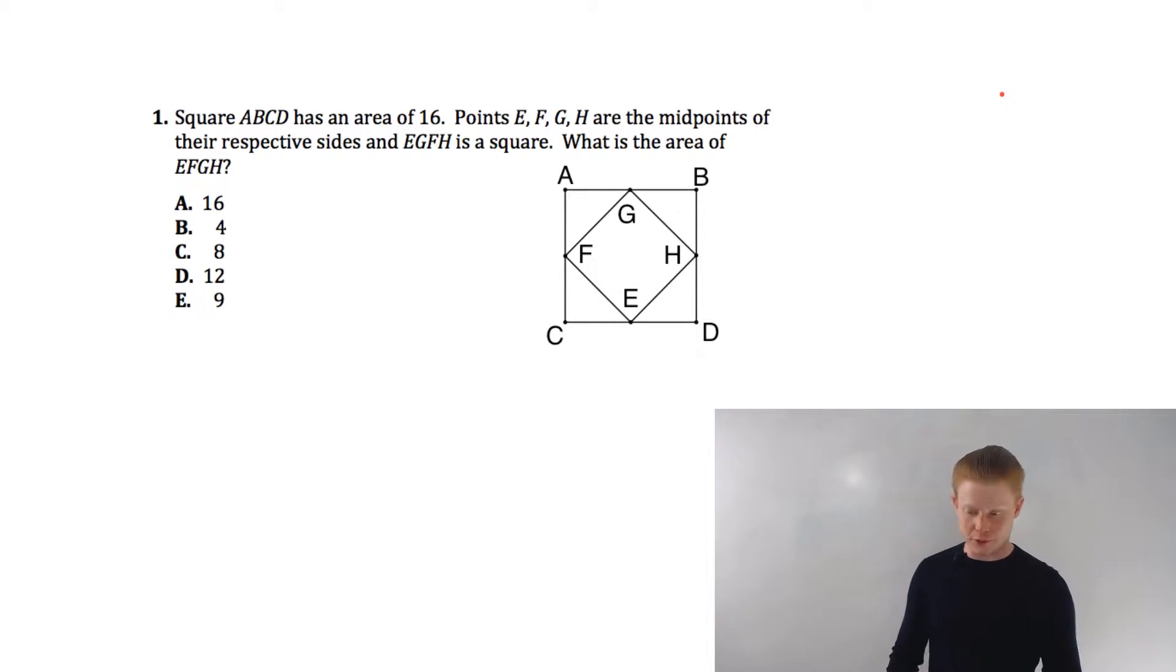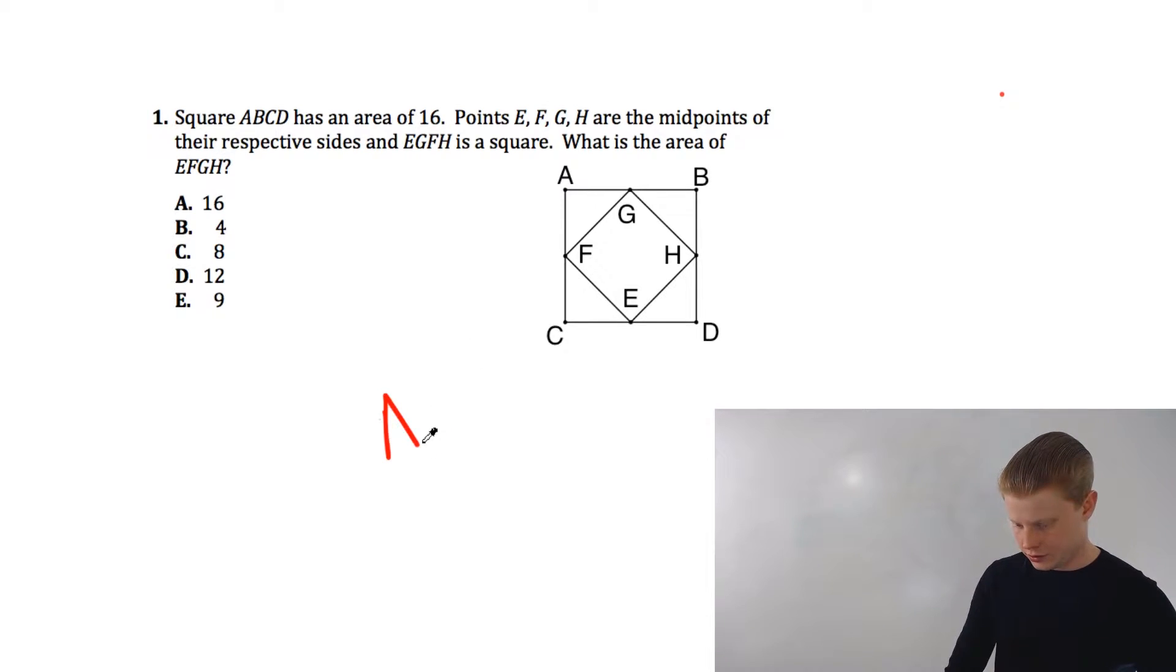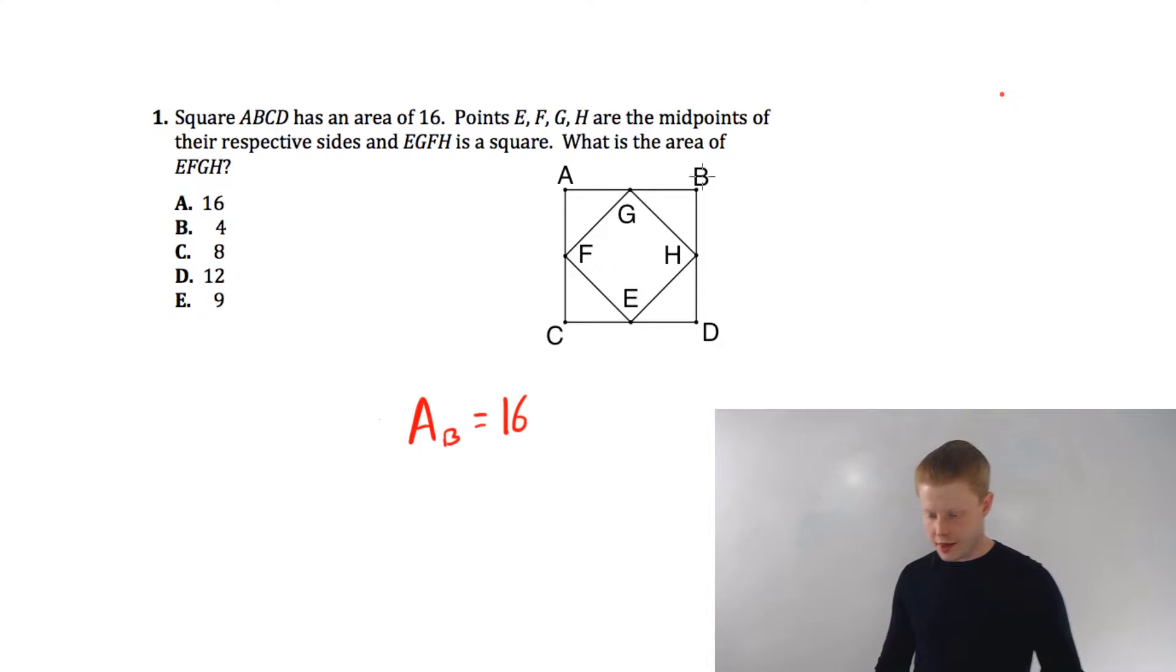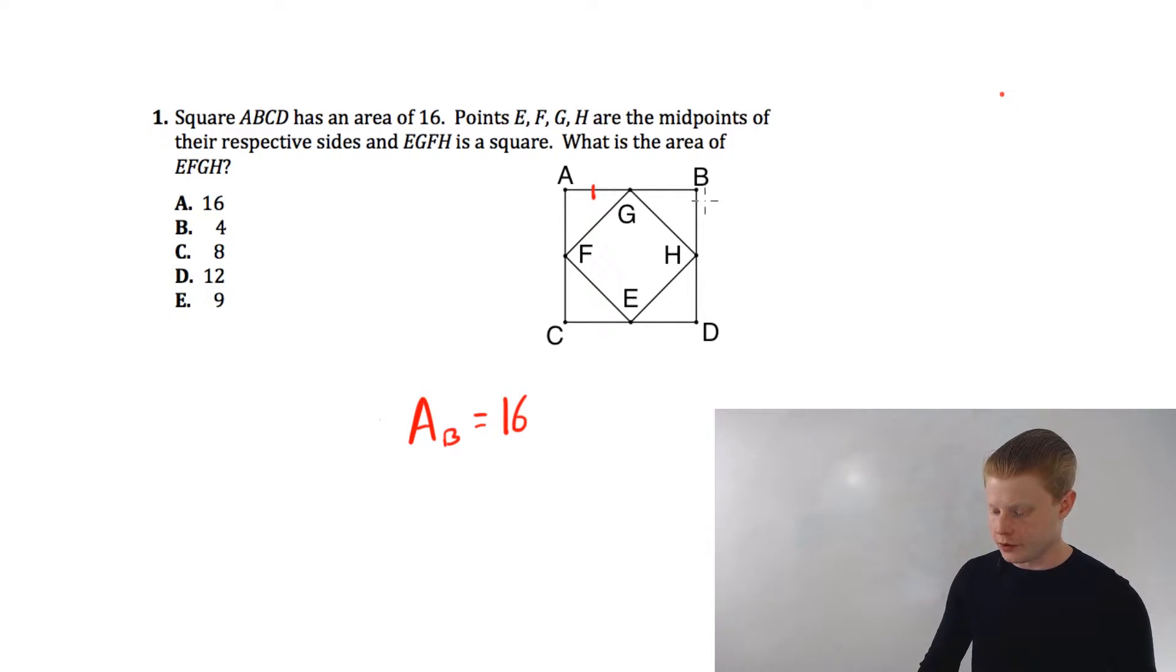Now let's talk about this one. We have a big square with an area of 16. Let's see if I can write a little straighter than that. Area of the big is 16 and these are the midpoints of the respective sides. I want to work that out.